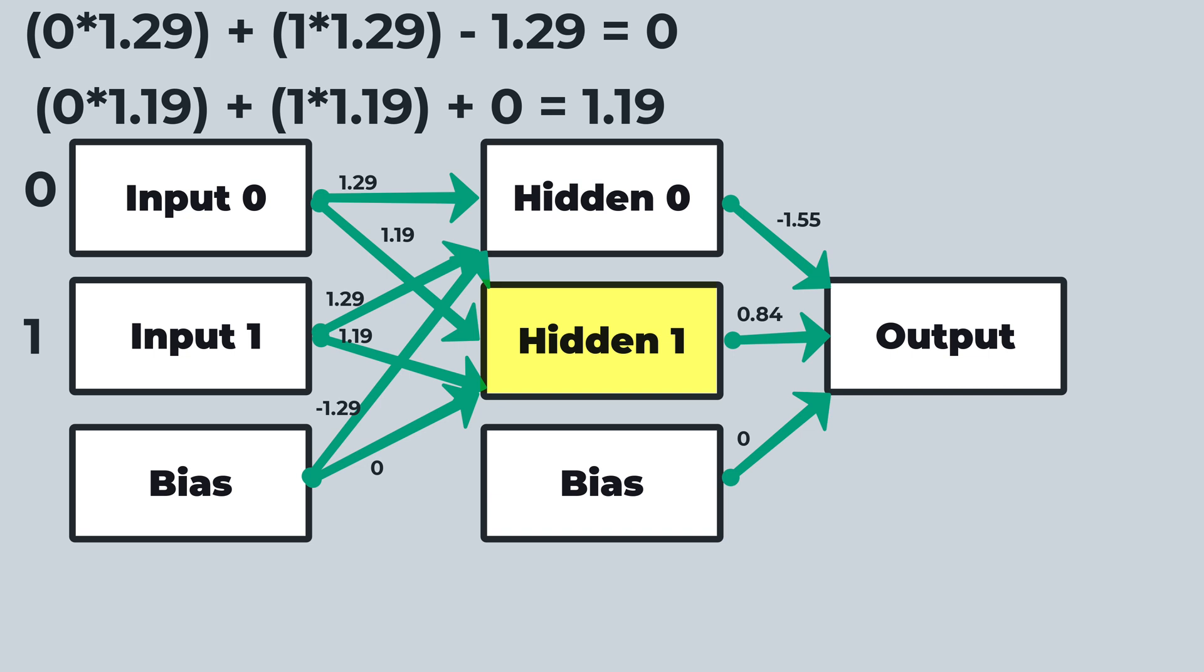Now we've calculated the two values for the two hidden neurons. We have to also apply the rectified linear unit to this. This is simply a max of zero or the sum. So we apply the max to each of these and we have the final two values for those two hidden neurons.